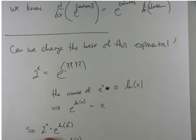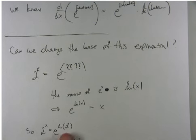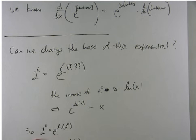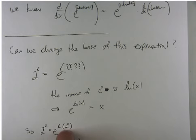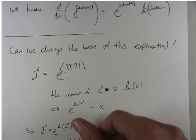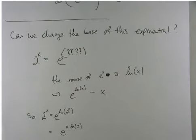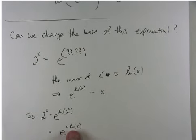2 to the x is really e to the natural log of 2 to the x. I haven't changed it at all, but now I have a base e instead of a base 2. It's just that my exponent is natural log of 2 to the x, which is kind of ugly. But there are nice properties of the natural log. If I have an exponent inside of a logarithm, that exponent can be written as a coefficient. So this is really just e to the x times natural log of 2.